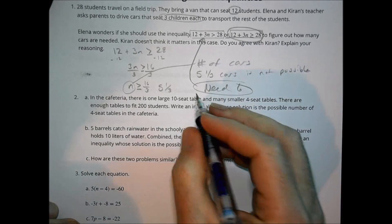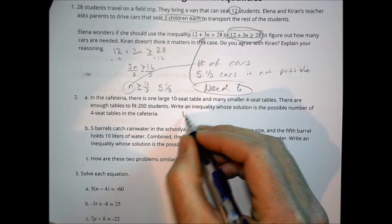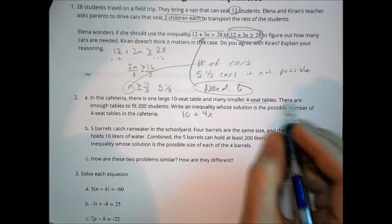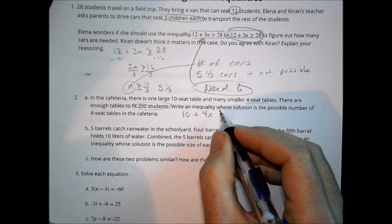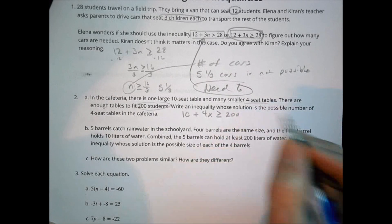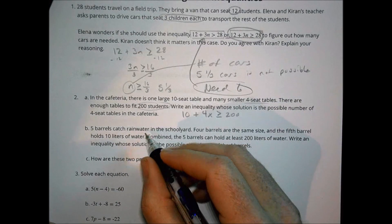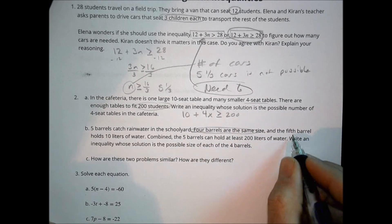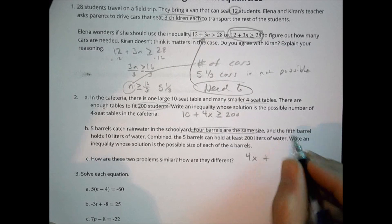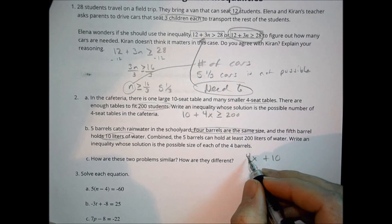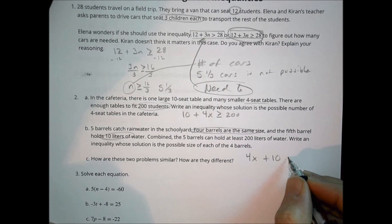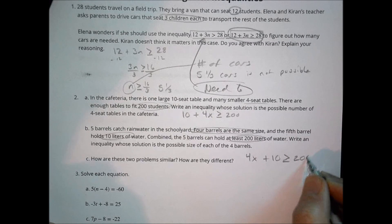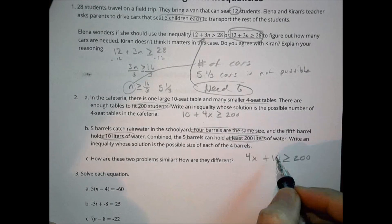Number two. In the cafeteria, there is one large 10-seat table and many smaller four-seat tables. There are enough tables to fit 200 students. So all those together is going to be greater than or equal to 200 students. That's our inequality. Five barrels catch rainwater in the schoolyard. Four barrels are the same size and the fifth barrel holds 10 liters. So four barrels are going to catch some amount of water here, and another one catches 10, and that's going to hold at least 200. So it's going to be greater than or equal to 200 liters of water. So there's an inequality.